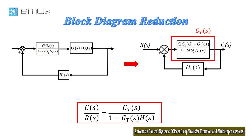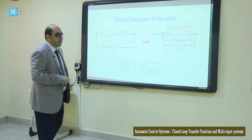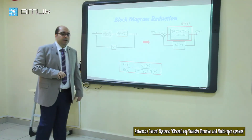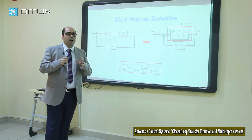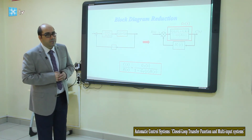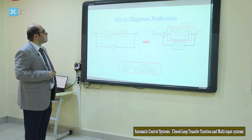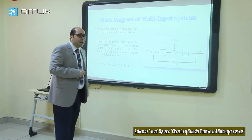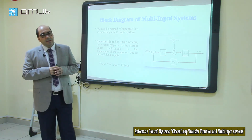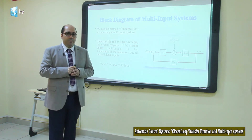We can write G_T(s) instead of this block for simplicity. At the end, the transfer function of the system — after reducing the block diagram — is G_T(s) divided by 1 minus G_T(s)·H(s). By simplifying complex block diagrams we can find the transfer function of any system.